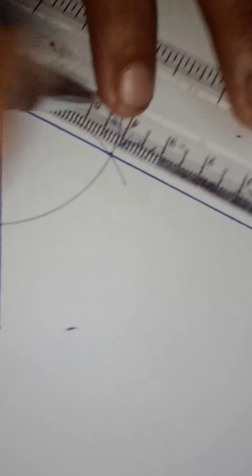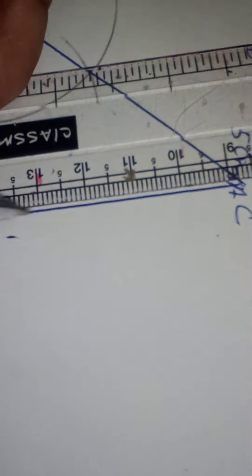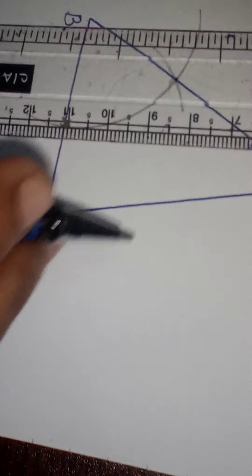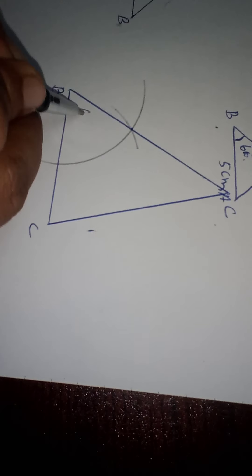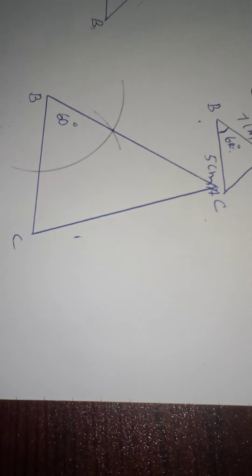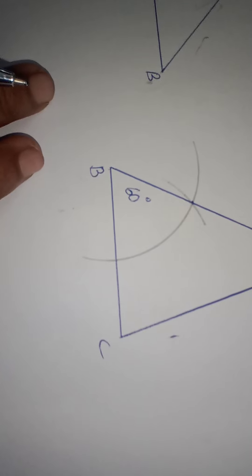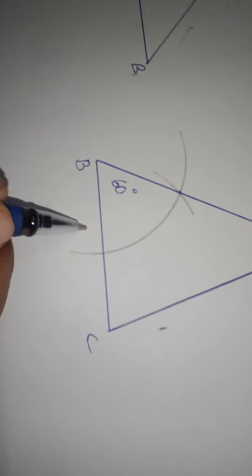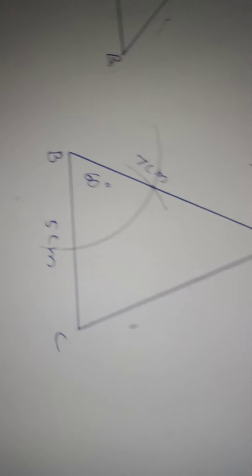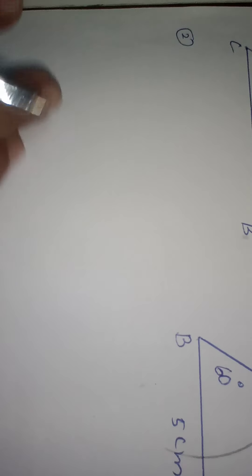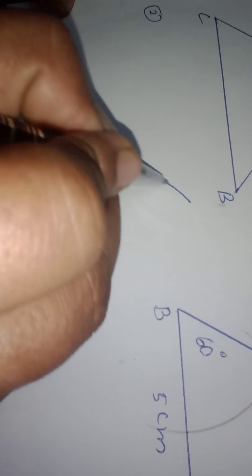AB equals 7 cm, so mark up to 7 cm and label it A. The third side AC is not given — just join A and C. If the question asks you to measure AC, you can measure it; otherwise leave it. This is 60 degrees, base 5 cm, and BA equals 7 cm. That is how you draw the triangle ABC with the given measurements.